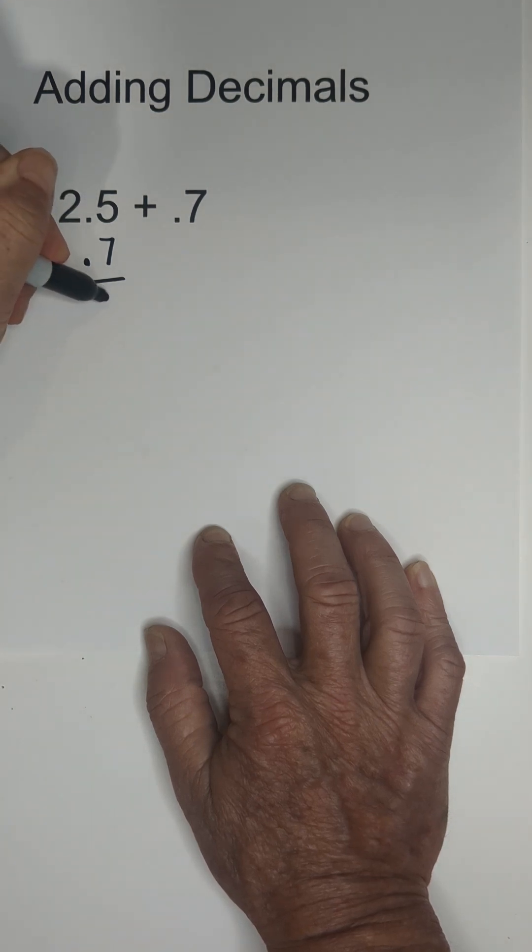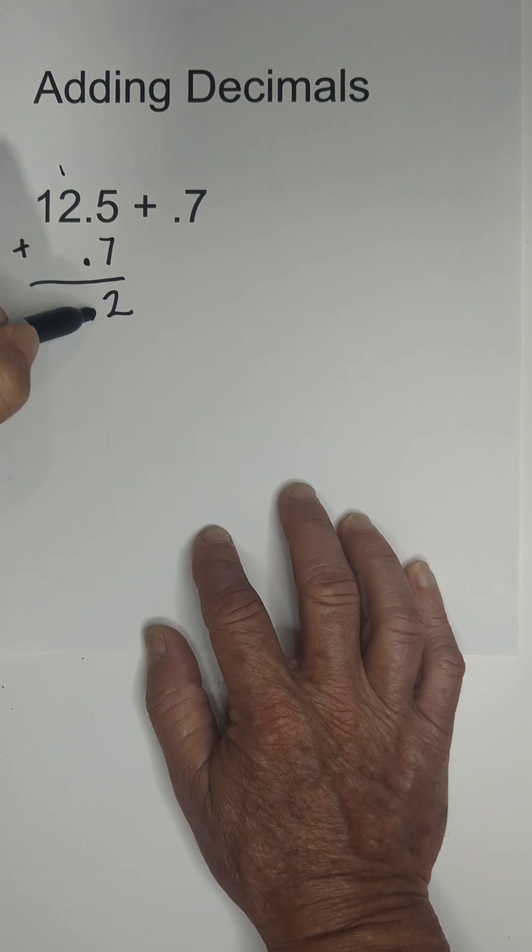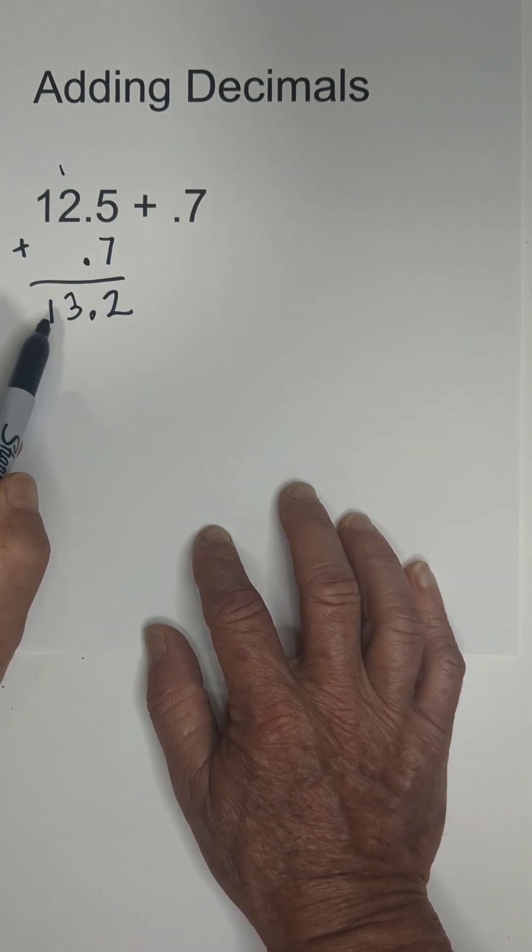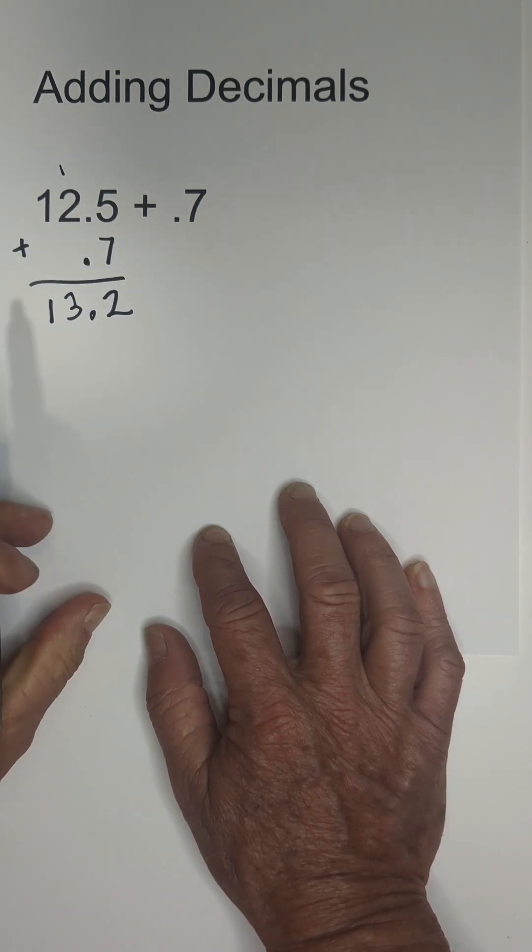7 plus 5 is 12. Carry the 1 here. Bring down the decimal. 2 plus 1 is 3. And bring down the 1. So 12 and 5 tenths plus 7 tenths equals 13 and 2 tenths.